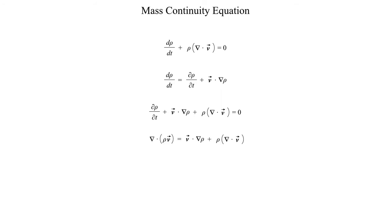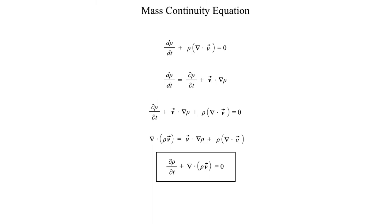There's another vector identity — which you're welcome to verify yourself — that essentially uses the product rule again. It states that V·∇ρ + ρ(∇·V) can be simplified to ∇·(ρV). So we replace those two terms with ∇·(ρV). And believe it or not, that is our end result — that is the mass continuity equation after jumping through all of the mathematical hoops and hurdles.